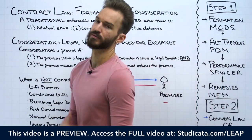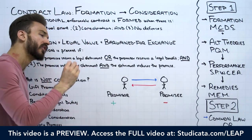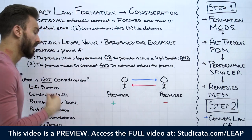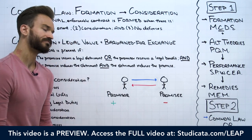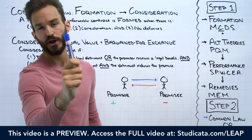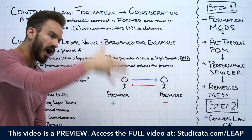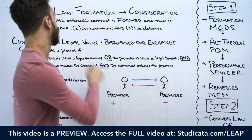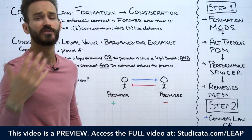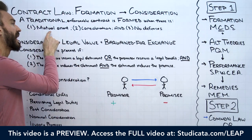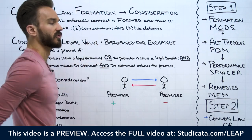Let's run through some examples — this is the easiest way to see consideration. Let's start with a basic example. I offer to sell you this dry erase marker for $5, and you say, 'I accept.' We know that's a valid offer and a valid acceptance, so we have mutual assent. Our next question in our contract formation analysis is whether that mutual assent is supported by consideration.